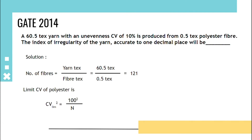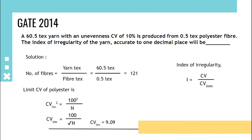Limit CV of polyester: we know that CV squared equals 100 squared upon N, so substituting: 100 upon root N gives 9.09. The index of irregularity is actual CV upon calculated limit CV. Actual CV is given as 10 percent, and limit CV we found as 9.09, so the index of irregularity will be 1.1.